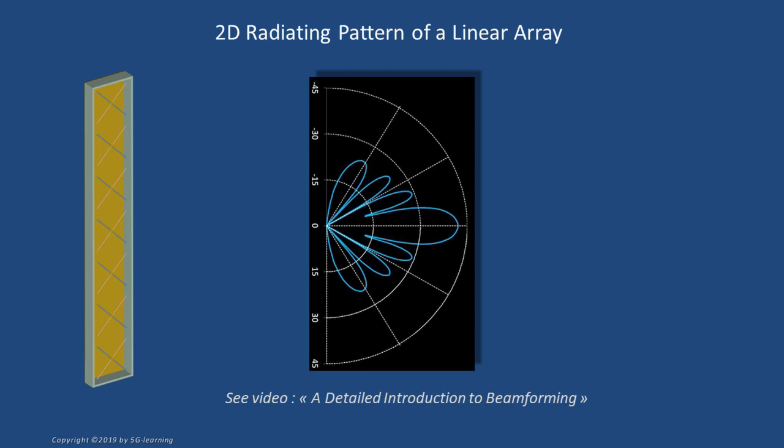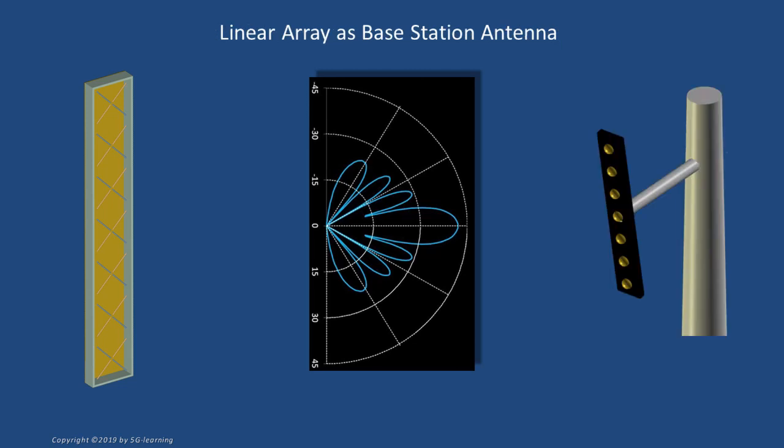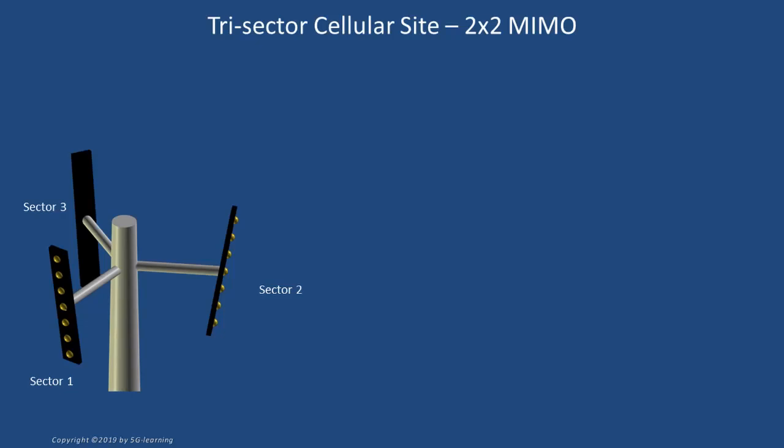In that video, we analyzed the radiation pattern on a plane including the array axis. Linear arrays have been used since the first generation of cellular communications. Each array covers one cell. In a typical cellular site, the surrounding area is covered by three cells, each spanning a 120-degree sector. The site includes three arrays, each transmitting and receiving radio signals from one sector. As each cross-polarized antenna element can support two simultaneous data streams, this operation mode is known as Multiple Input Multiple Output 2x2, abbreviated as MIMO 2x2.